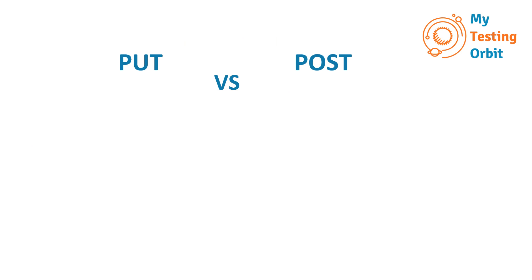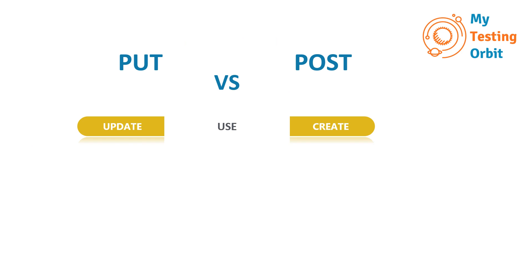Next, let's look at the differences between PUT and POST methods — this question comes up very commonly in interviews. The first difference is usage. PUT can be used for updating, or it can create a resource if it doesn't already exist, but its main job is to update a single resource. The main job of POST is to create a resource.